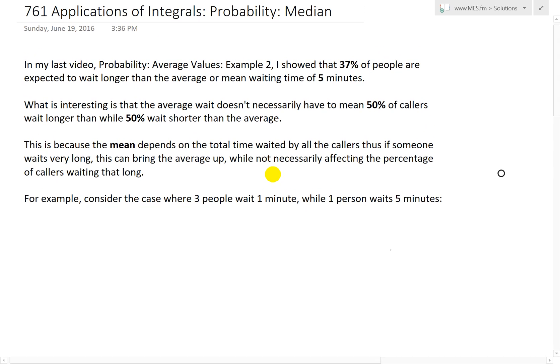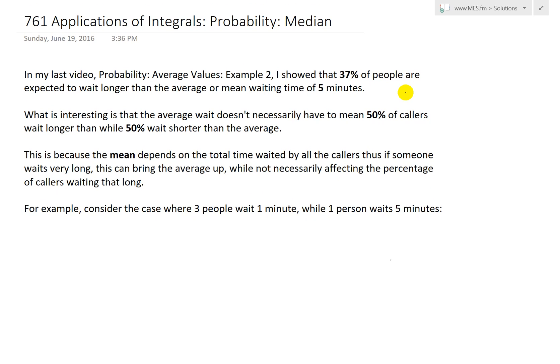This time we'll go over the concept of a median. In my last video on probability average values, example 2, I showed that 37% of people are expected to wait longer than the average or mean waiting time of 5 minutes. You can see that video linked below.